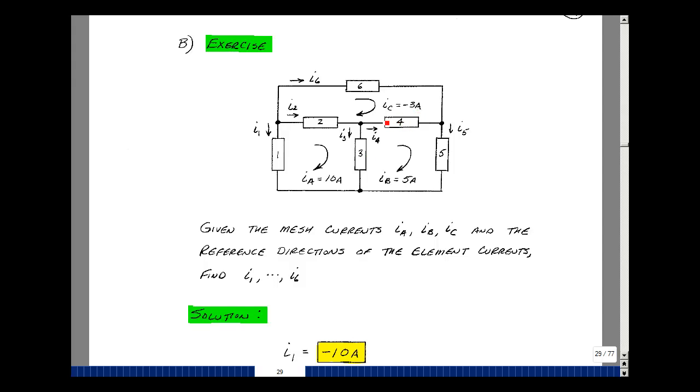The current in element four is in this direction, and that's going to be I sub b minus I sub c. So 5 amps minus a minus 3, give me 8 amps. I5 is in the same direction as I sub b, so just equal to 5 amps. And then lastly, element six is in the same direction as I sub c, but that's equal to minus 3 amps.